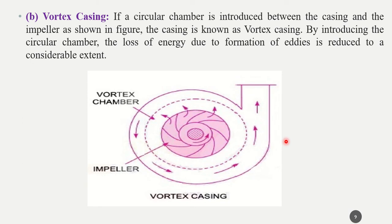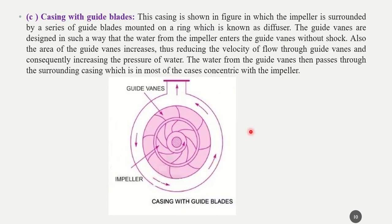When eddies form, pressure energy reduces, and since we require high pressure to deliver water to greater heights, eddies must be minimized. To address this, vortex casing is used. In vortex casing, a circular chamber is introduced between the casing and the impeller, as shown in the diagram — this circular chamber minimizes eddy formation.